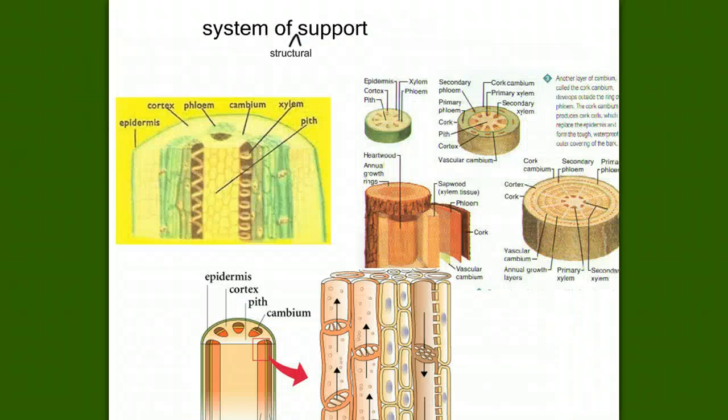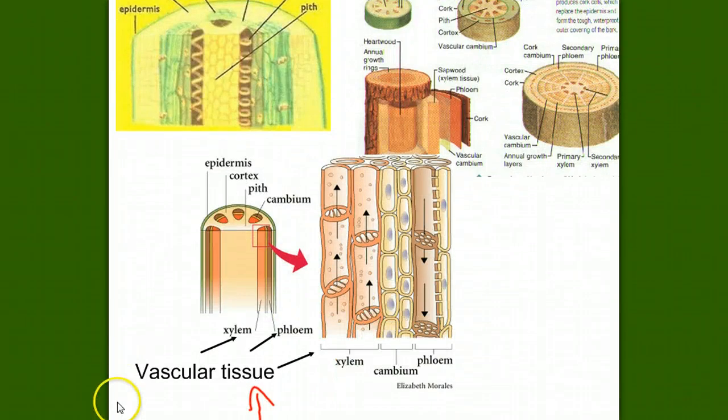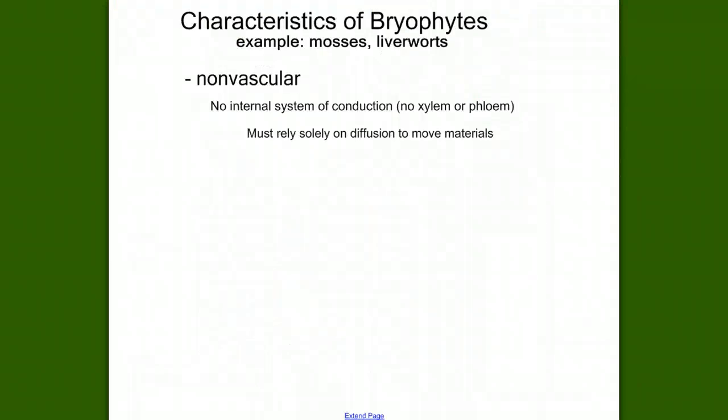What else does vascular tissue provide plants? Recall that vascular tissue also provides a system of structural support. If you don't have this structural support, in what ways are you limited? How are bryophytes limited, besides being small, by lacking this structural support?